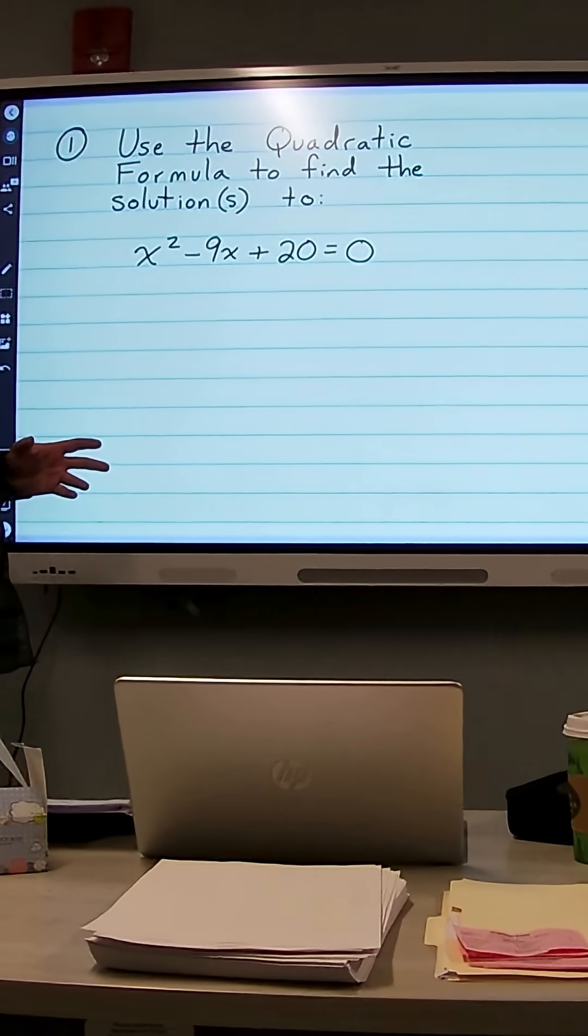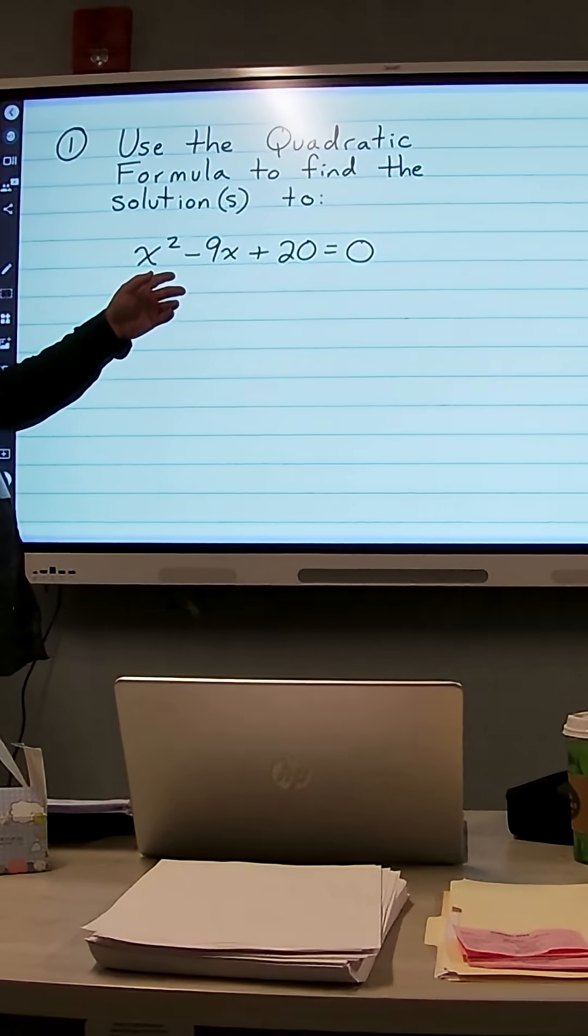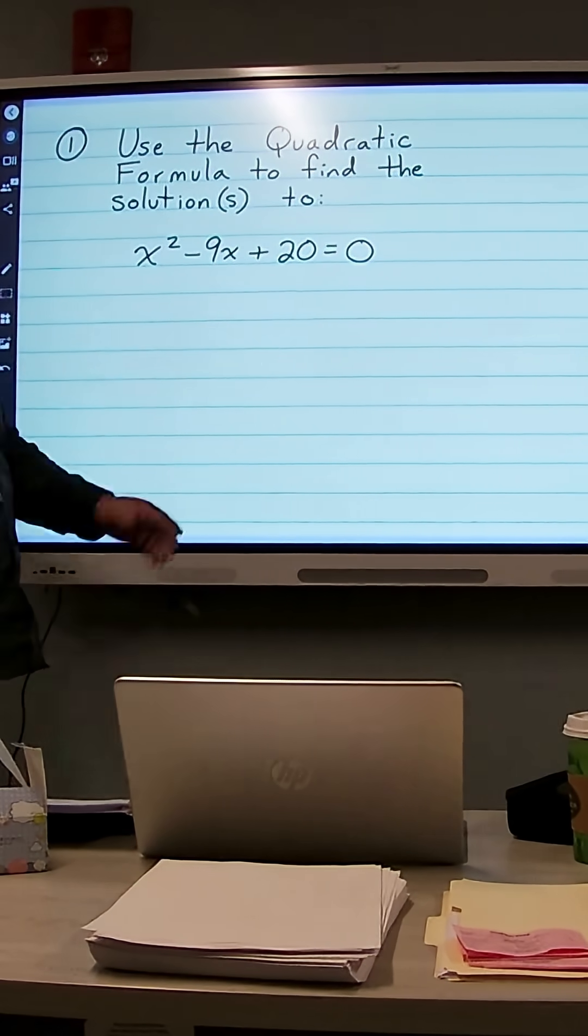All right, this first problem, we're going to use the quadratic formula to find the solution to the equation x squared minus 9x plus 20 is equal to 0.